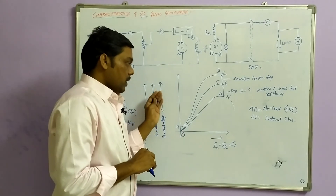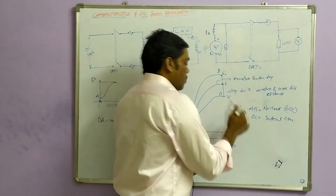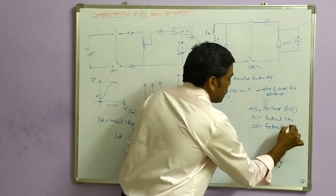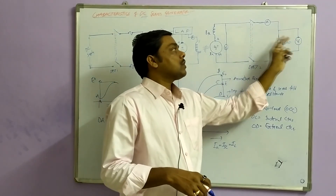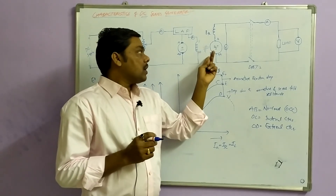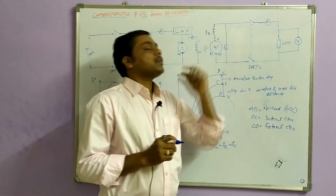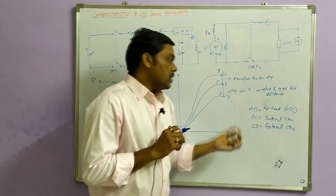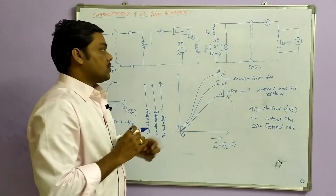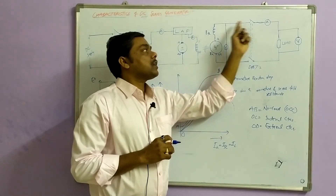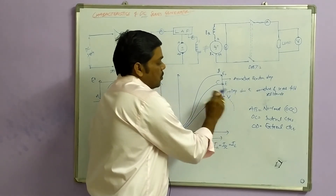Now no load and internal characteristics are completed. To draw the load characteristics — which we call OD — that is the external characteristics. To draw the external characteristics, you close the DPST switch and the load current starts flowing into the load. Since armature current, series current, and load current are all the same, you have to limit the load current. The demagnetizing effect on armature MMF will be less, so as you increase the load current, the load voltage also starts increasing.